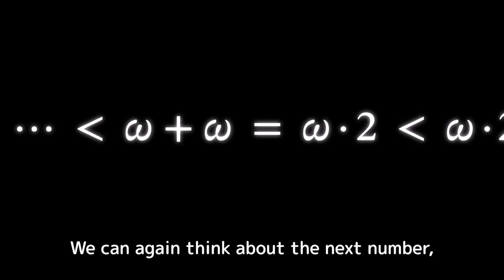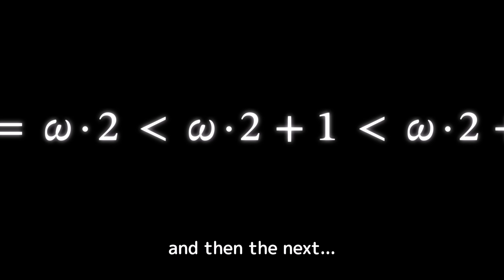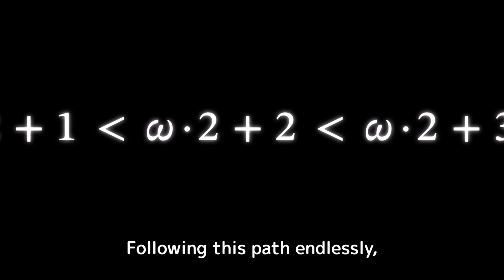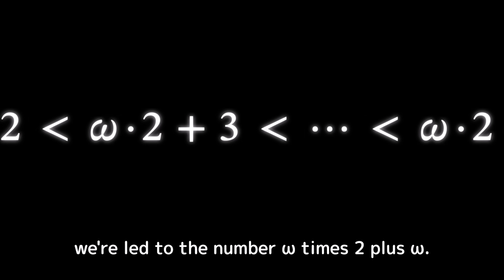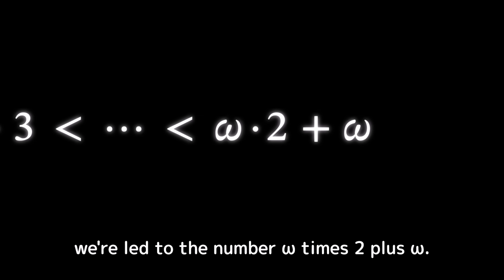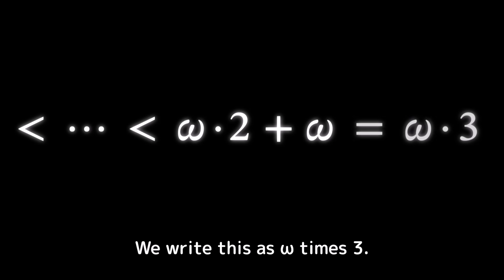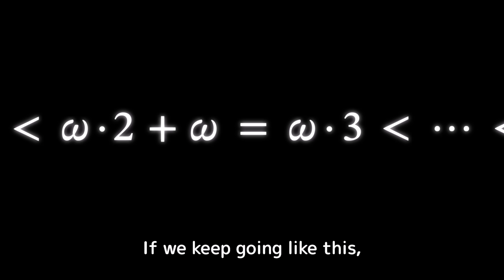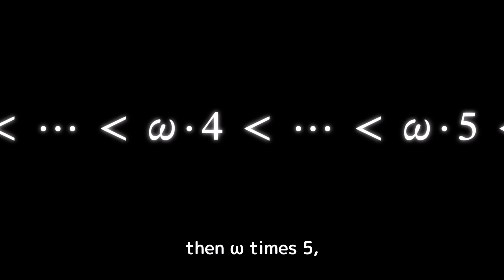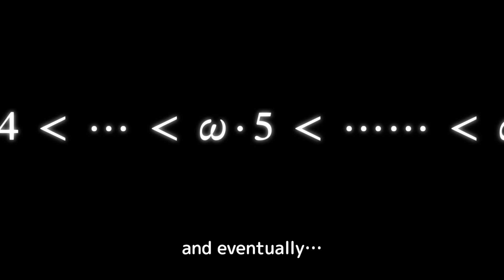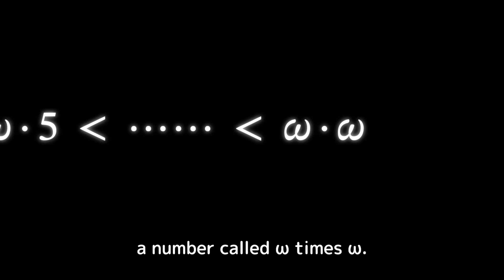We can again think about the next number. And then the next. Following this path endlessly, we're led to the number omega times two plus omega. We write this as omega times three. If we keep going like this, we get omega times four. Then omega times five. And eventually, a number called omega times omega. We write this as omega squared.